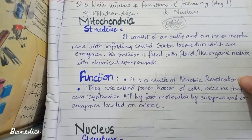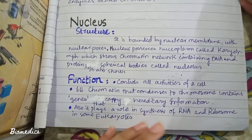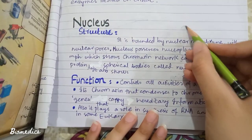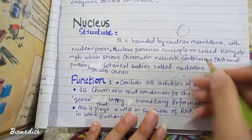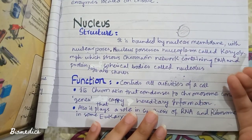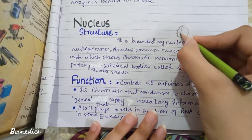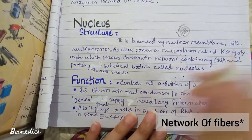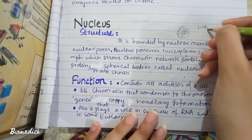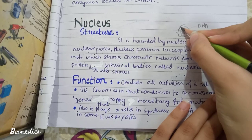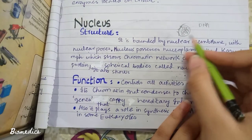We have defined the structure and two functions of mitochondria. Next is the nucleus. The nucleus is enclosed by a membrane with pores called nuclear pores, and the cytoplasm connection is called nucleoplasm. Inside, there is a chromatin network containing DNA which carries important genetic information, and a spherical body called the nucleolus.